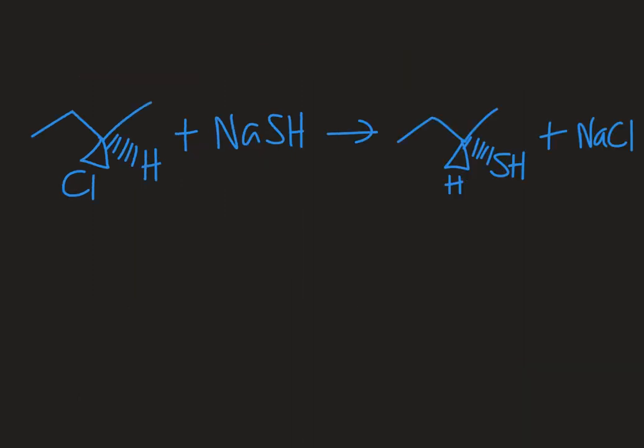We can introduce a thiol functional group by doing a substitution reaction. We just need a starting material that has a leaving group on it—a halogen is a good leaving group. Then we're going to introduce a salt that has a nucleophile with a negatively charged sulfur that has an H on it. The sodium here is the spectator ion; specifically, this SH⁻ is the nucleophile.